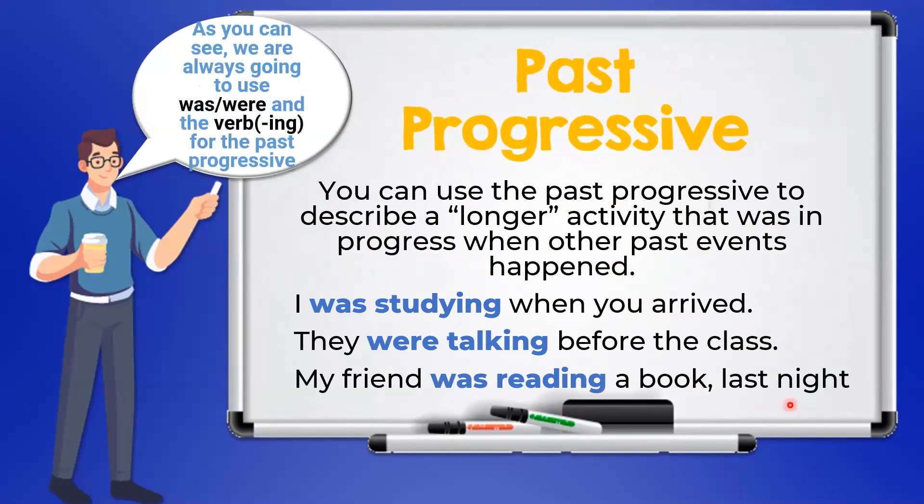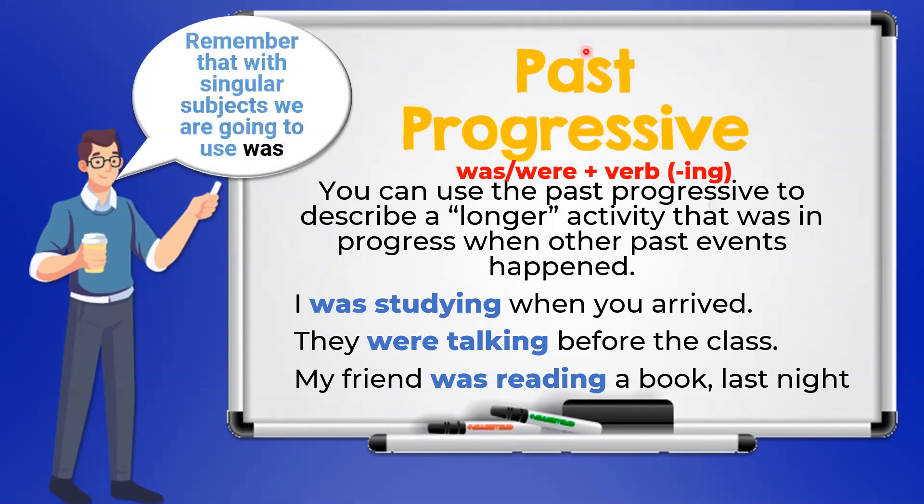As you can see, we're always going to use was or were and a verb in -ing for the past progressive. Remember that with singular subjects we use was and with plural subjects we use were.